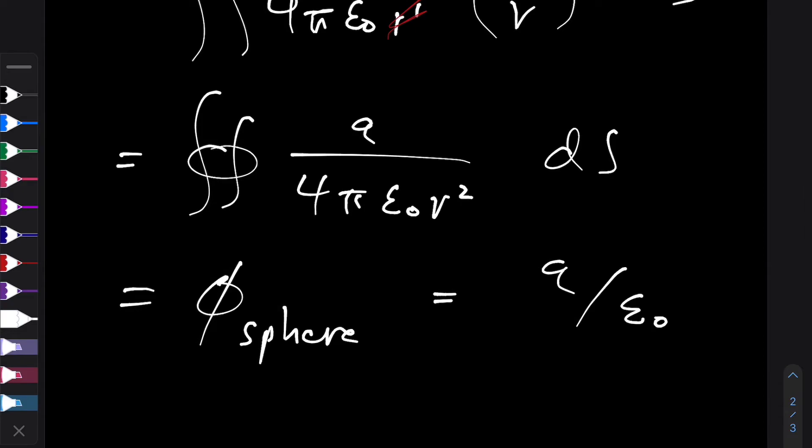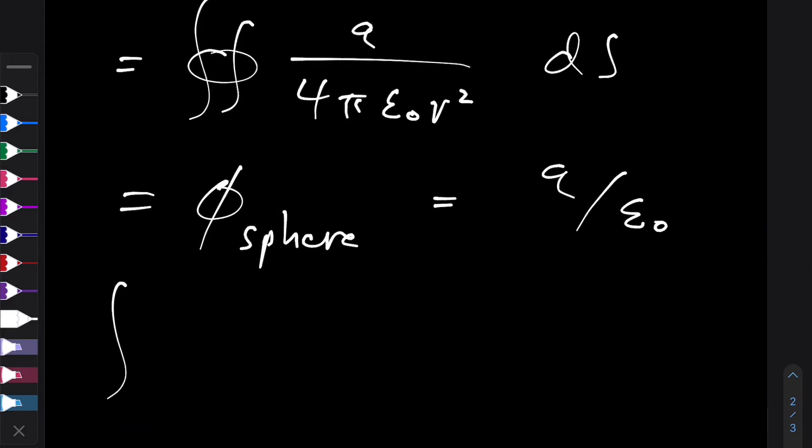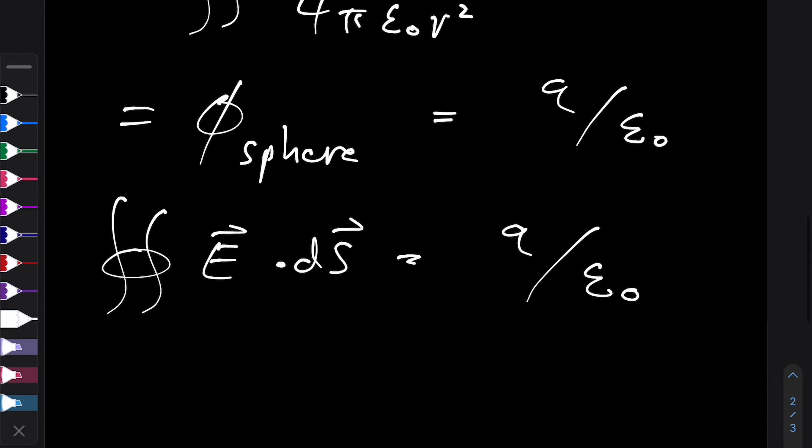So what we've just shown is Gauss's law, which is a law that says, it's sort of the integral form of what we're after. It's the integral form of Maxwell's first equation. So let's just write out the entire thing we've found so far. So we've just found that the flux through any surface is equal to the charge inside the surface divided by ε₀.